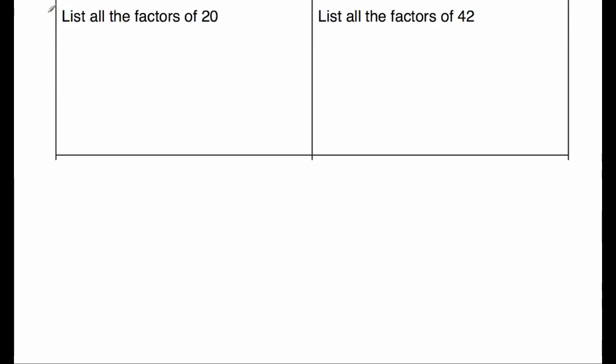Our next question says to list all the factors of 20. So let's work these out in pairs. So 1 times 20, we've got 2 times 10, and we've got 4 times 5. So the factors of 20 would be 1, 2, 4, 5, 10, and 20.